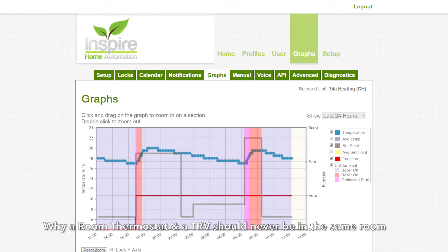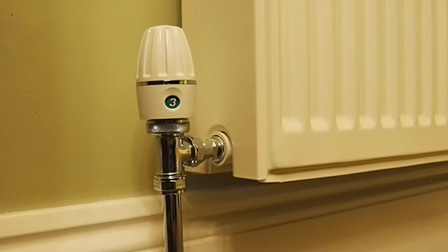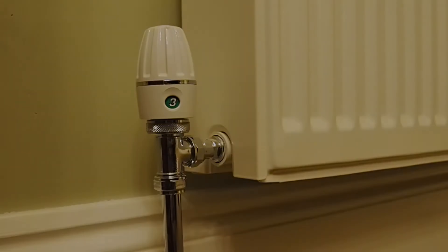Why a room thermostat and a TRV should never be in the same room? The problem occurs when the TRV is set lower than the room thermostat. If the TRV is set to 3, which in our example is around 20 degrees, and the room thermostat is set to 22 degrees, then the room will only ever reach 20 degrees. Therefore, the room thermostat, which wants 22 degrees, will never switch off, and your boiler will be on all the time, costing you a lot of money.